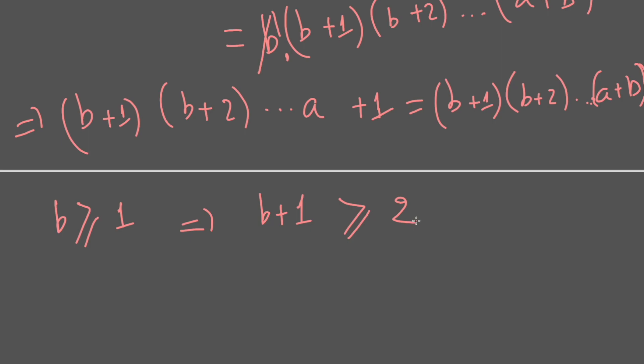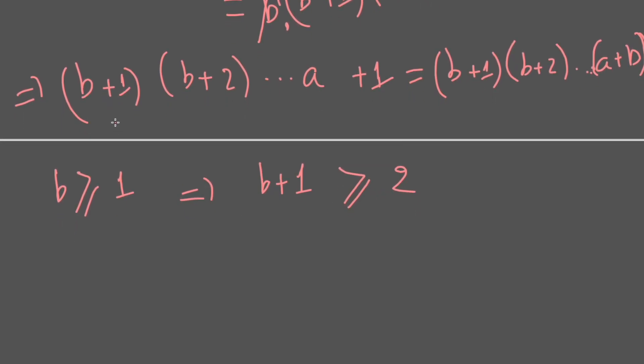And we see that on the left side, the last term equals 1, which cannot be divided by b+1. But on the right side, every term is divisible by b+1.